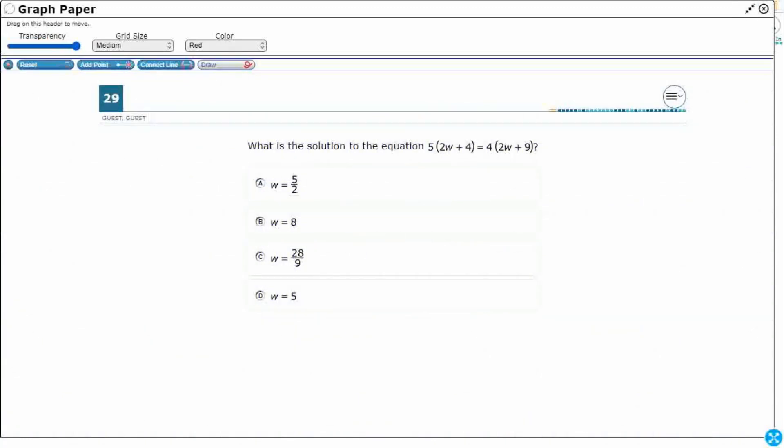So what we're going to be using is something called the distributive property. Now this is not something that we've learned just in Algebra 1. We've been using it for many years. It's one of the properties of equations like the commutative and the associative, but this is very important with linear equations here.